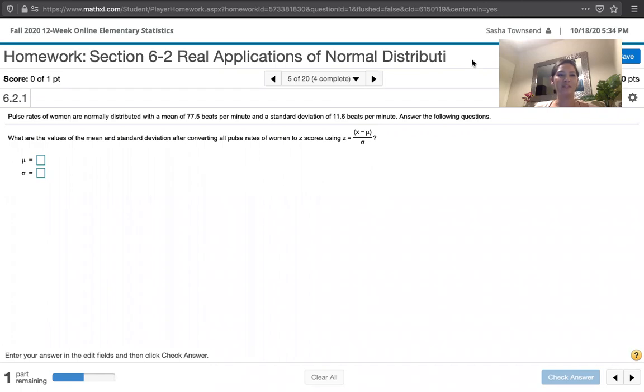The problem statement says pulse rates of women are normally distributed with a mean of 77.5 beats per minute and a standard deviation of 11.6 beats per minute. Answer the following questions.